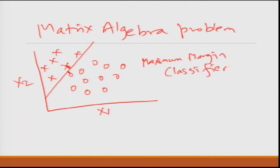The line divides the two classes such that the perpendicular distance between the two nearest neighbors to that line is maximum. This is called a maximum margin classifier. This works very beautifully if the data is linearly separable — there can be multiple lines that classify, so they find the line that maximizes the perpendicular distance.